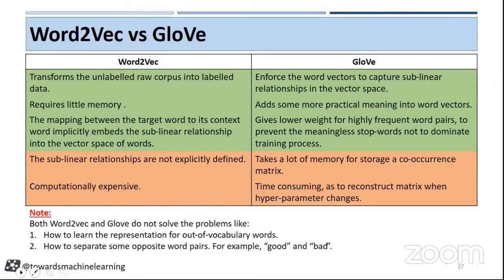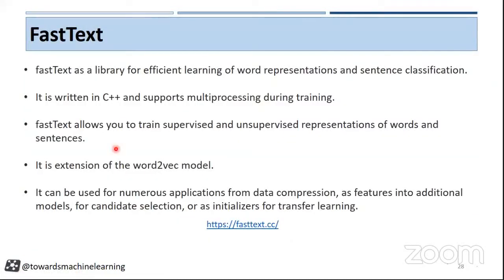So what is the next model we have? It is FastText. It is a library developed in C++ by the Facebook team to learn efficient word representations and to do sentence classification.